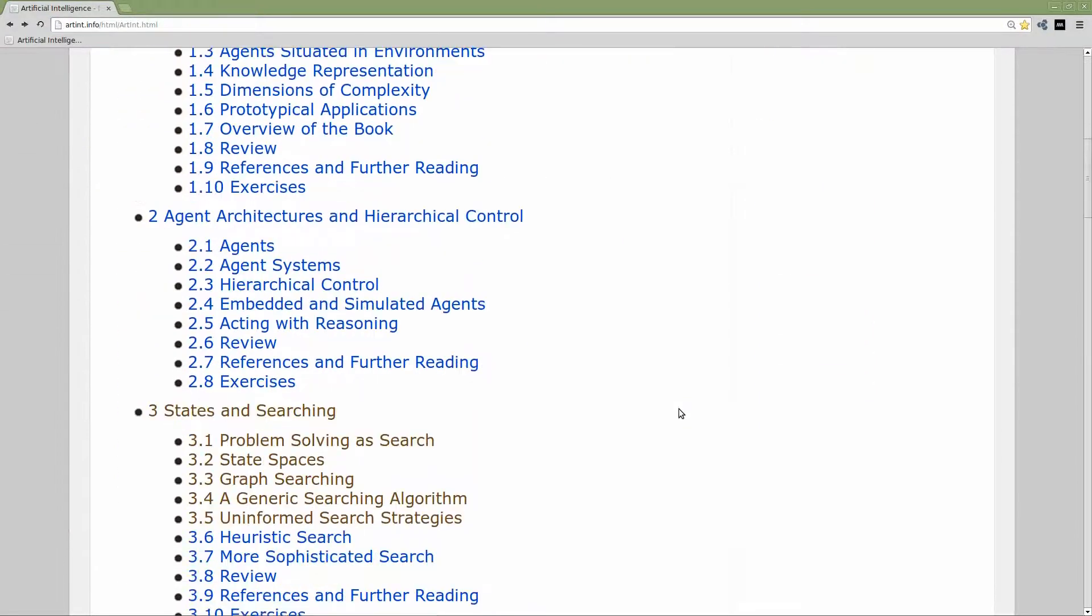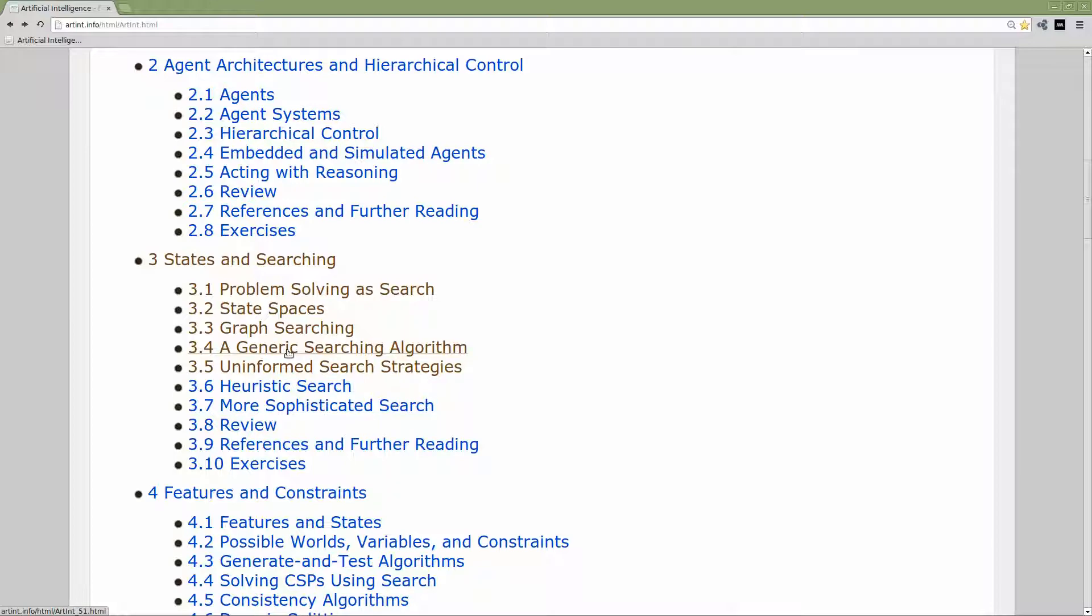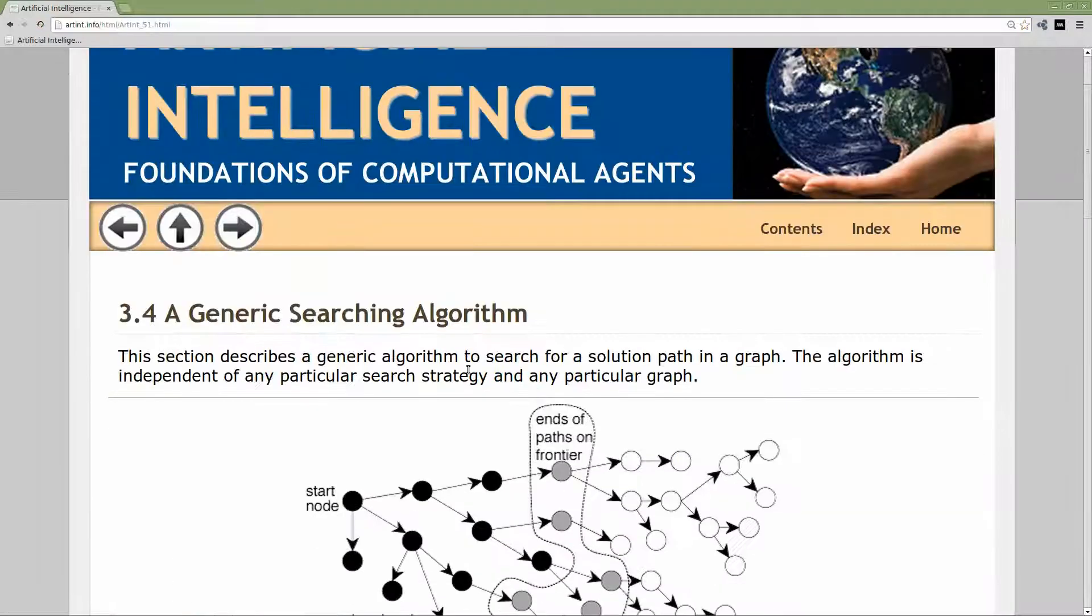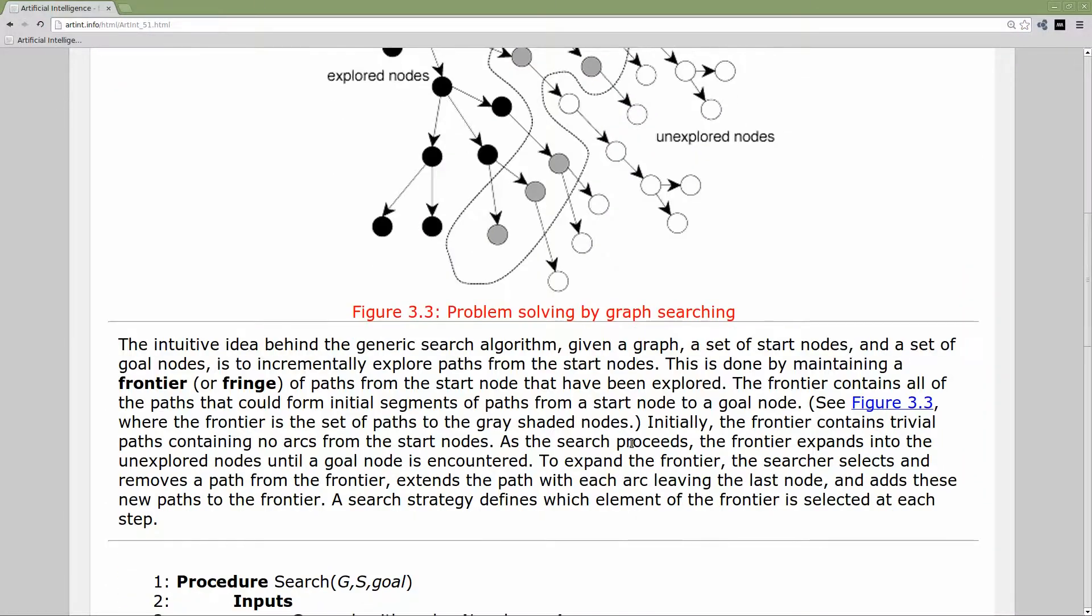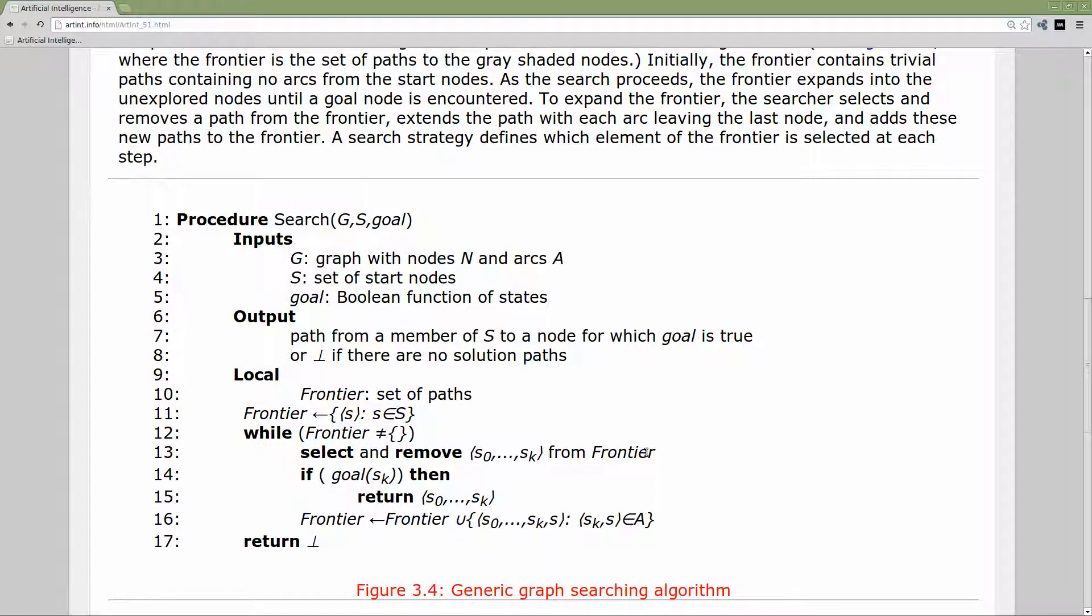Let's take a look at our generic searching algorithm as a starting point. Here's the algorithm. It looks a little cryptic at first, but I think it's not too bad. What are the inputs? This is a graph, our problem represented as a graph. In fact, if we were going to program this, this could be a program that generates this graph on the fly. Some set of start nodes, the goal. So this is the specification of the problem in graph form.